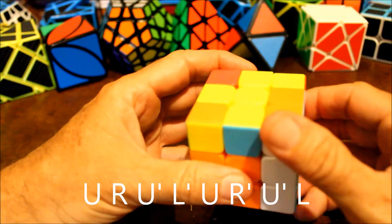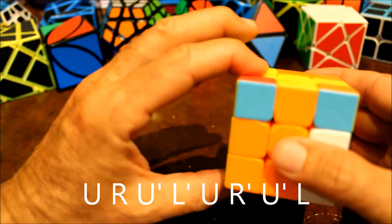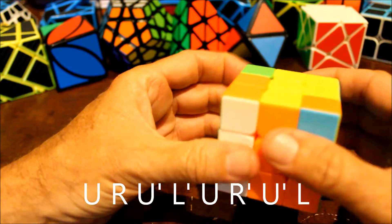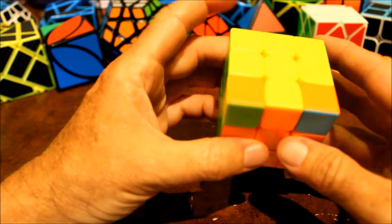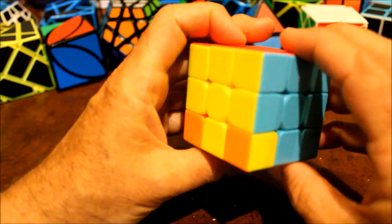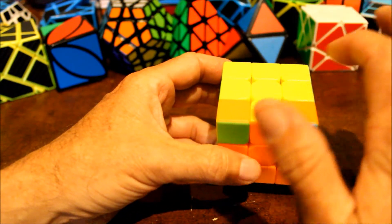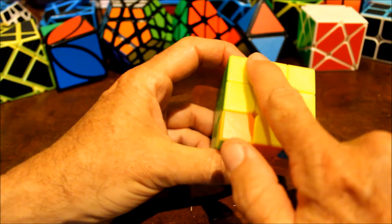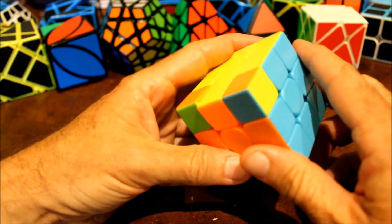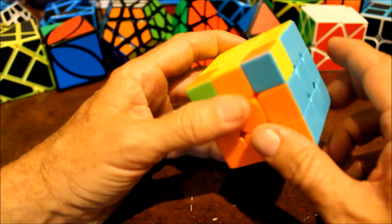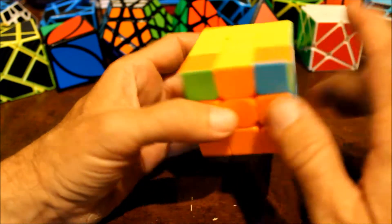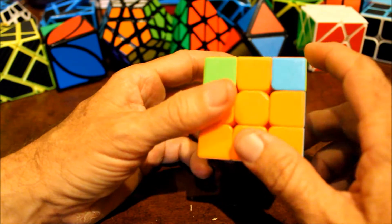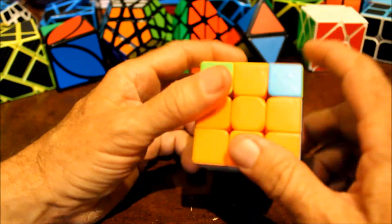Upper, right, upper prime, left prime, upper, up, right prime, up prime, left. And what that does is it rotates this one, this one, this one, and this one in a counterclockwise direction. In this case it moved them all to the right positions but sometimes you need to do it twice. In this case I only needed to do it once.